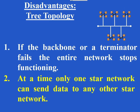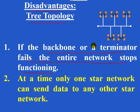What are the disadvantages of tree topology? If the backbone or a terminator fails, the entire network stops functioning. Backbone means if the central cable fails or if the terminator is not working properly, the entire network comes to a standstill.